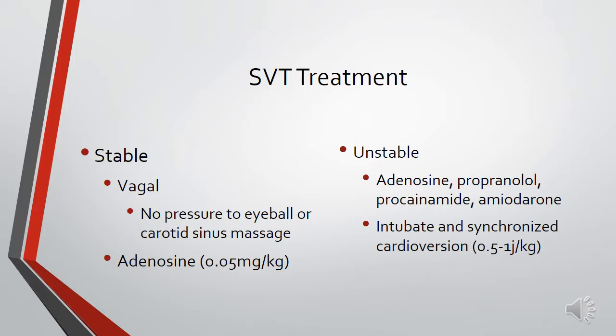Another treatment for stable SVT is adenosine at 0.05 milligrams per kilogram. Unstable SVT is treated more aggressively with drugs including adenosine, verapamil, and amiodarone. If synchronized cardioversion is needed, the patient should be intubated and the dose is 0.5 to 1 joule per kilogram.